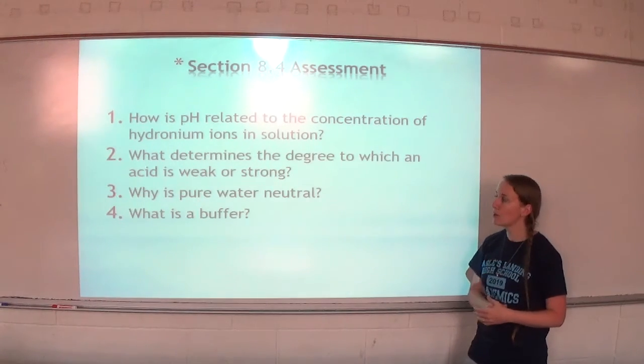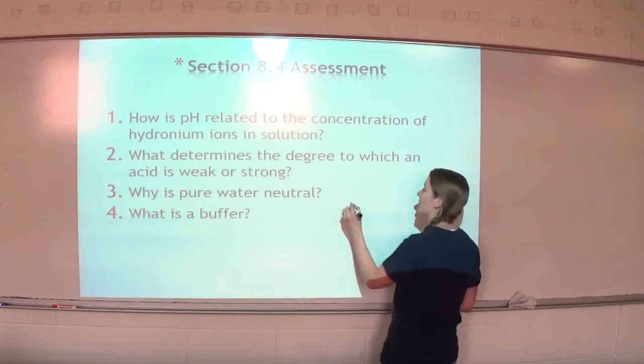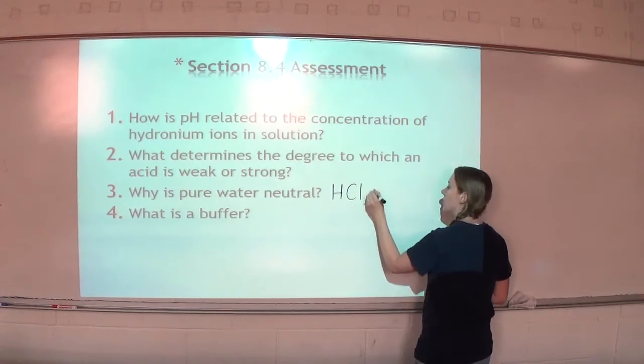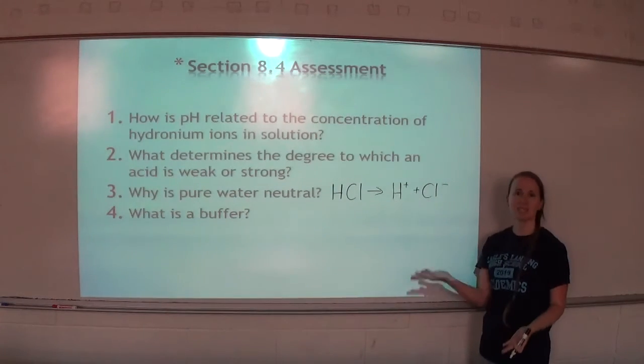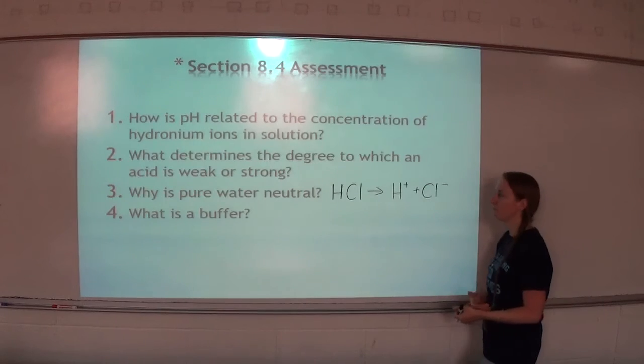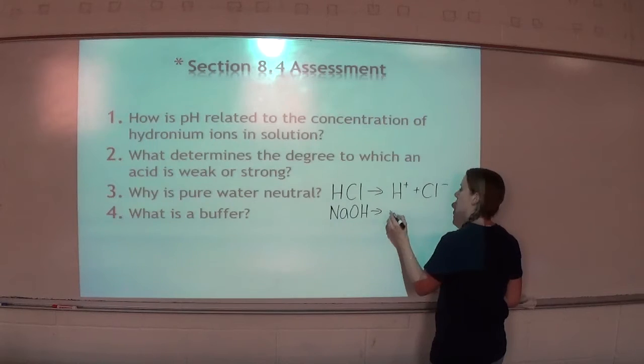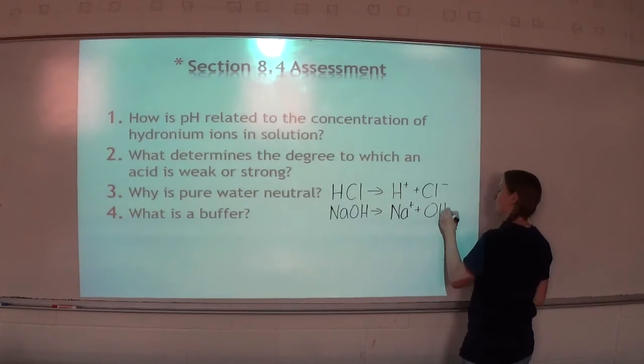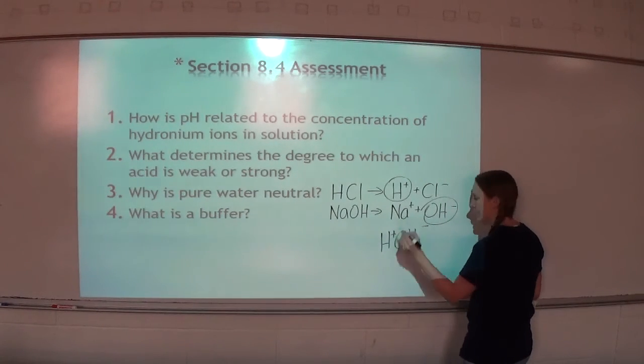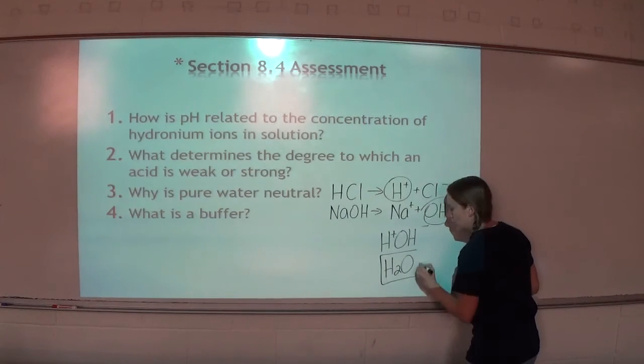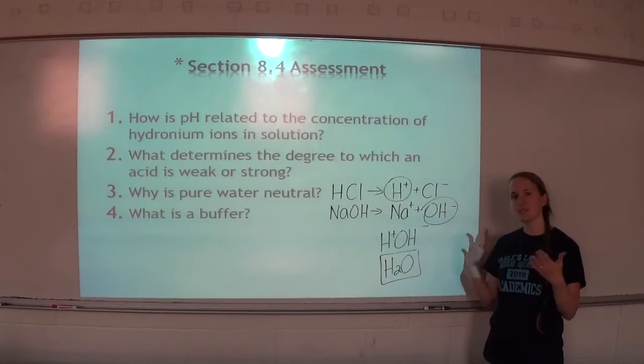Number three: Why is pure water neutral? If you remember, acids produce H3O+ because they lose an H+. When HCl goes into water, it becomes H+ and Cl-. Hydronium comes from that H+ just attaching to a water molecule. When a base is put in water, we get the OH-. H+ and OH- just makes H2O water. So it's neutral because the H+ and the OH- cancel each other out.